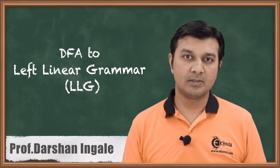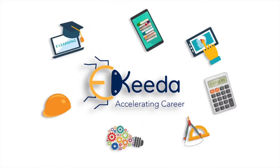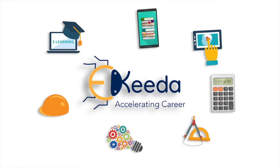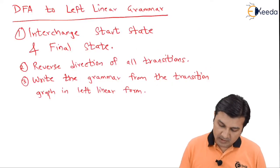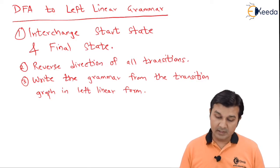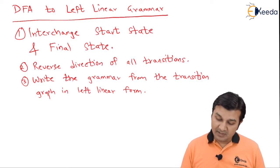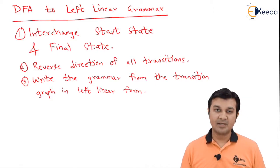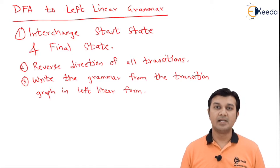What is the procedure? The procedure says: interchange the start state and the final state, reverse the direction of all the transitions, and write the grammar from the transition graph in the left linear form.